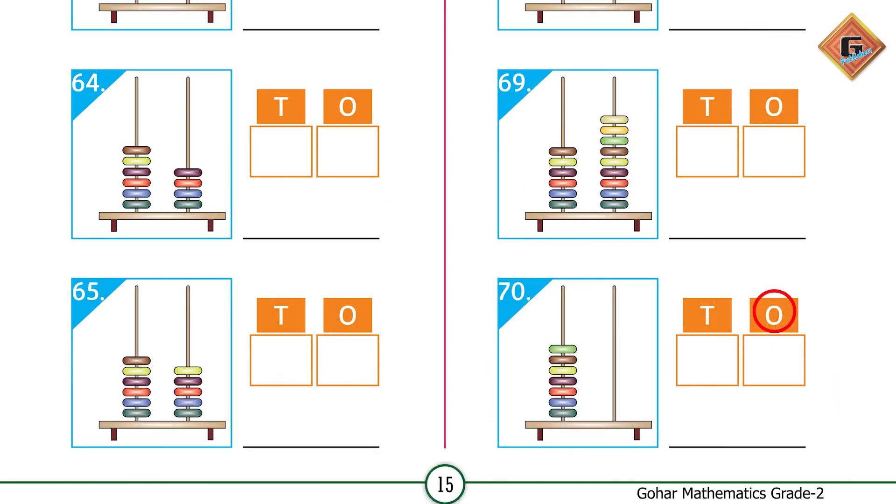After 69, when 9 comes, we change it. Now the ones rod is empty and on the tens rod there are seven beads. So we write zero under ones and seven under tens, and the number name is 70.